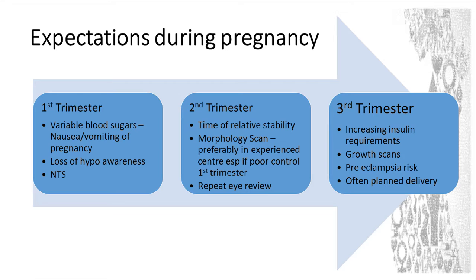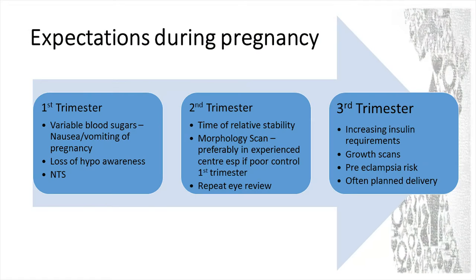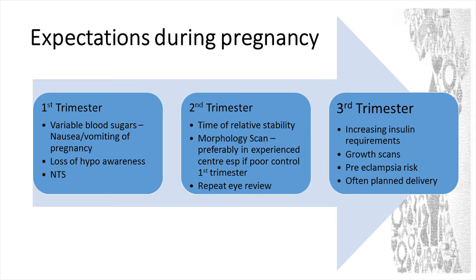I get them to be aware particularly when driving — take their blood sugar before they hop behind the wheel of a car, the 'over five to drive' rule. In the second trimester it's a time of relative stability, but it's nice to have a morphology scan preferably at an experienced centre, particularly if they've had poor control at conception or in the first trimester. It's nice to have another look at their eyes at around 28 weeks because anything that has taken off will be diagnosable at that point. In the third trimester, they're going to have markedly increasing insulin requirements — insulin-sensitive type 1s can get really anxious when they see their requirements creeping up.